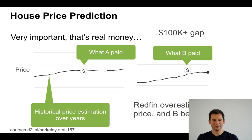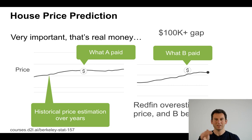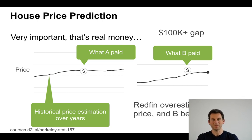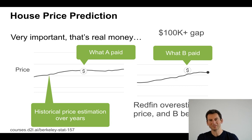This is real money. The model tries to pick the curve of the price over time. Maybe buyer A picks some price that's spot on, maybe a little bit lower. Maybe buyer B pays more money. If B relies on the Redfin model and Redfin overestimates the price by 100,000 dollars, then it's going to be 100,000 dollars out of pocket — which is not great.